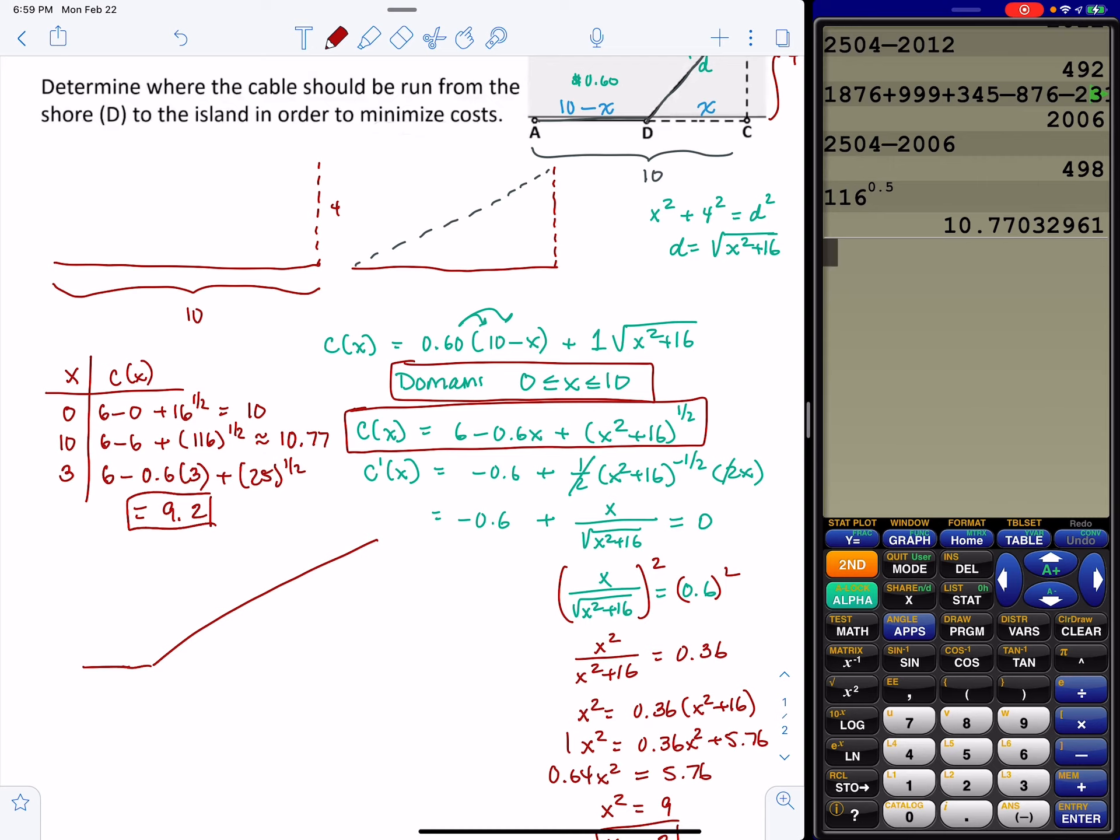So a little bit more of a difficult example because of the derivative, but just use our general concept. Construct your function. Find your derivative. Find your critical numbers. Compare and deduce what your minimum and maximum are. Thanks for watching.